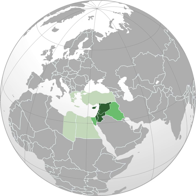Most populations in the Levant speak Levantine Arabic, usually classified as North Levantine Arabic in Lebanon, Syria, and parts of Turkey, and South Levantine Arabic in Palestine and Jordan. Each of these encompasses a spectrum of regional, urban, and rural variations. In addition to these varieties, a number of other dialects of Arabic are spoken in the Levant area, such as Levantine Badawi Arabic and Mesopotamian Arabic.